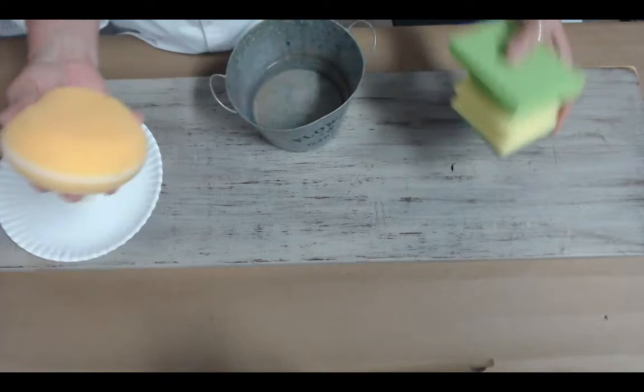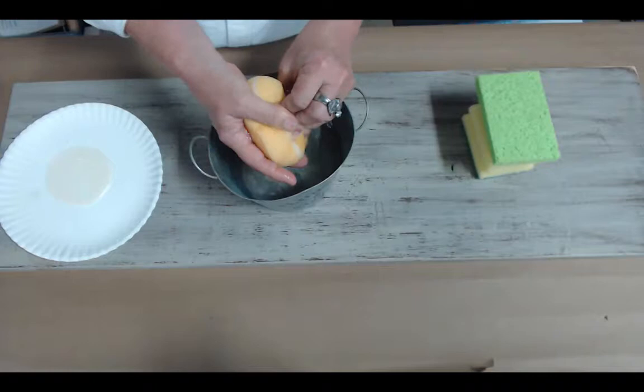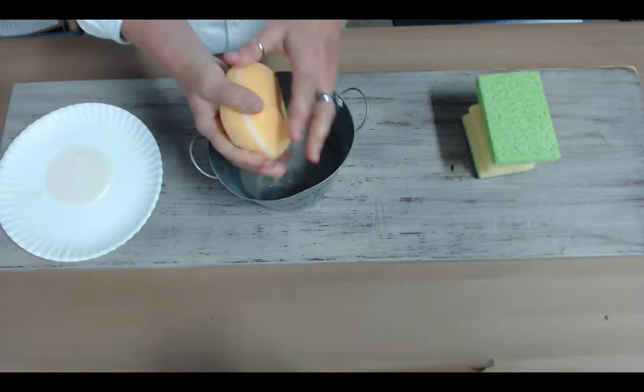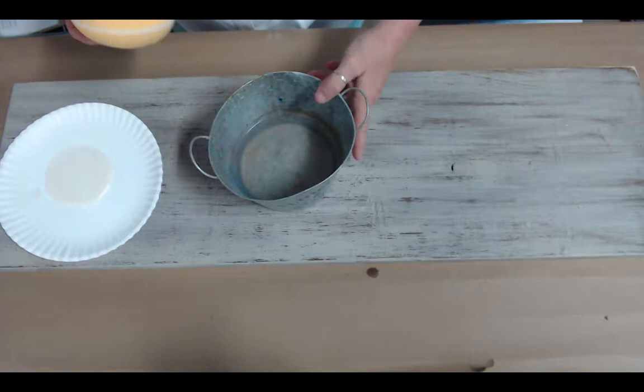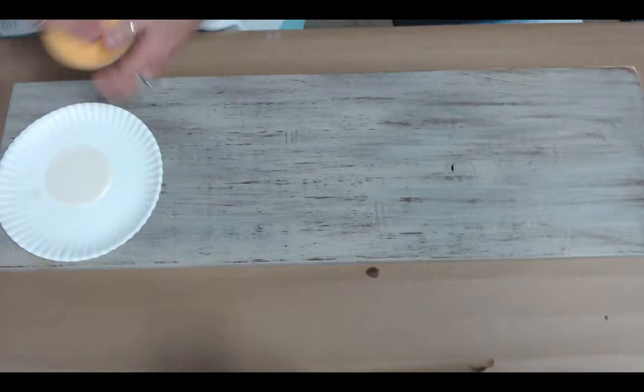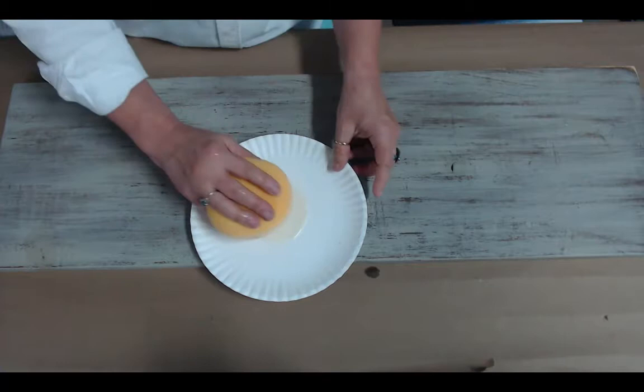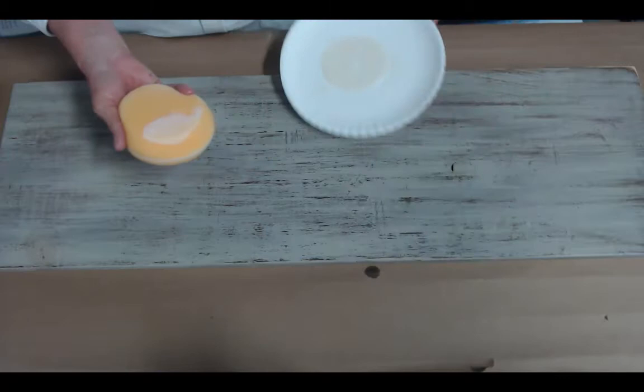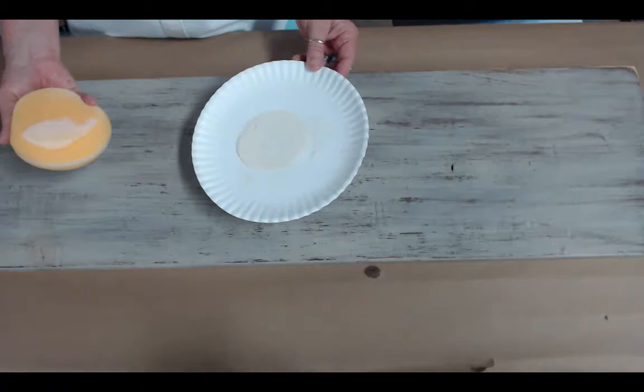You're going to get the sponge wet and squeeze all the water out because you just want it damp, not saturated. Then you're going to dip your sponge into the top coat. You don't want a lot, just a little, because less is more and it takes less time to dry.